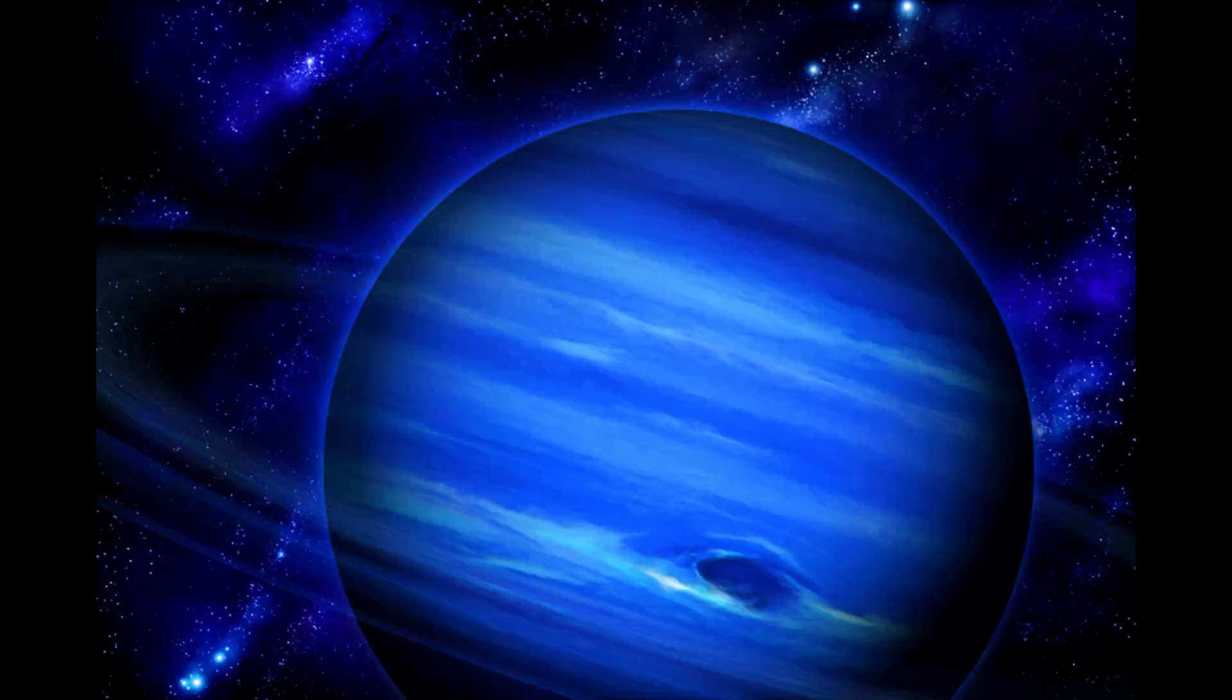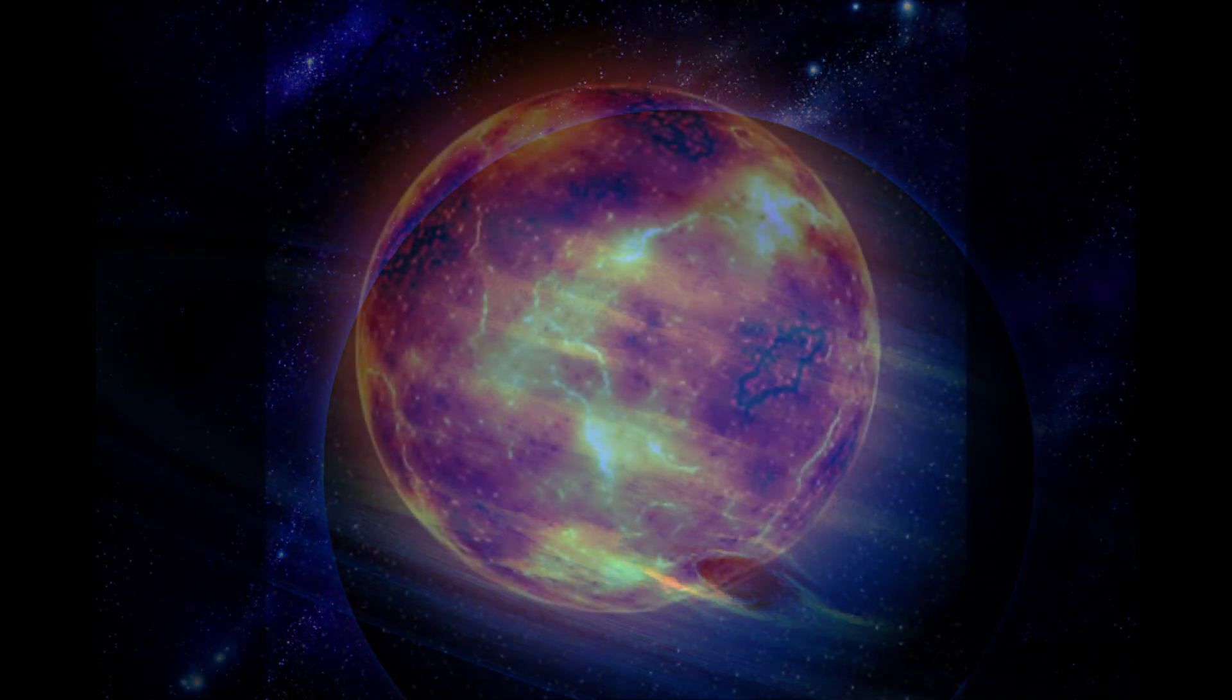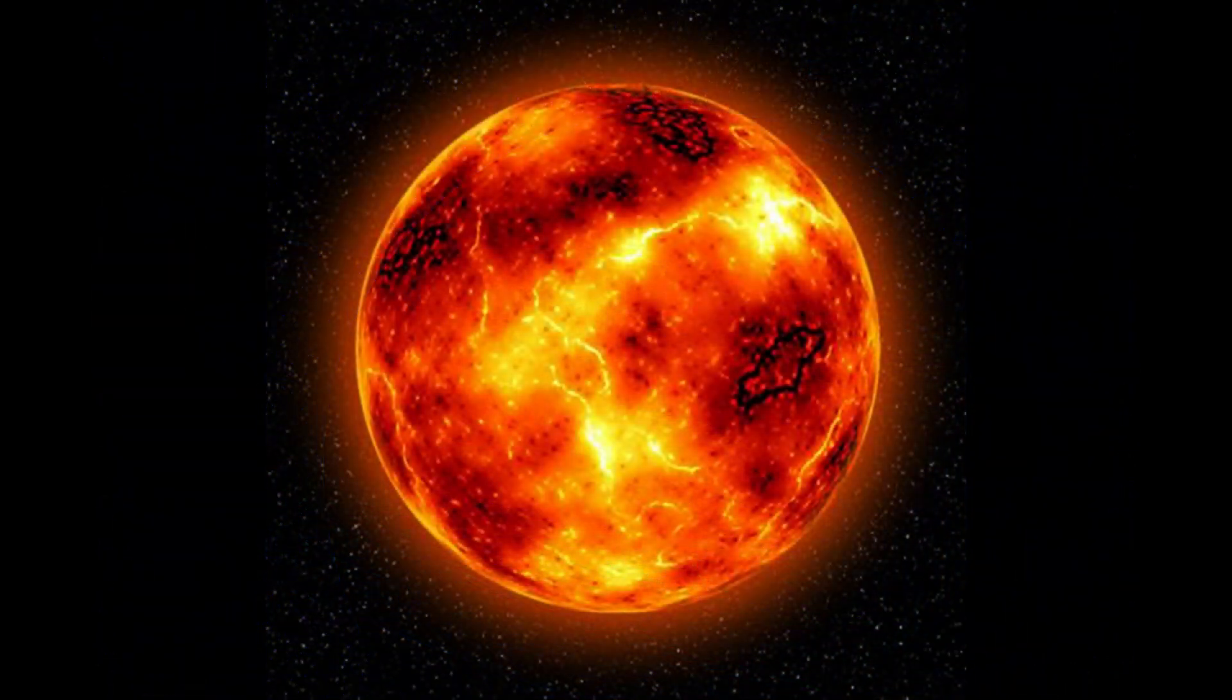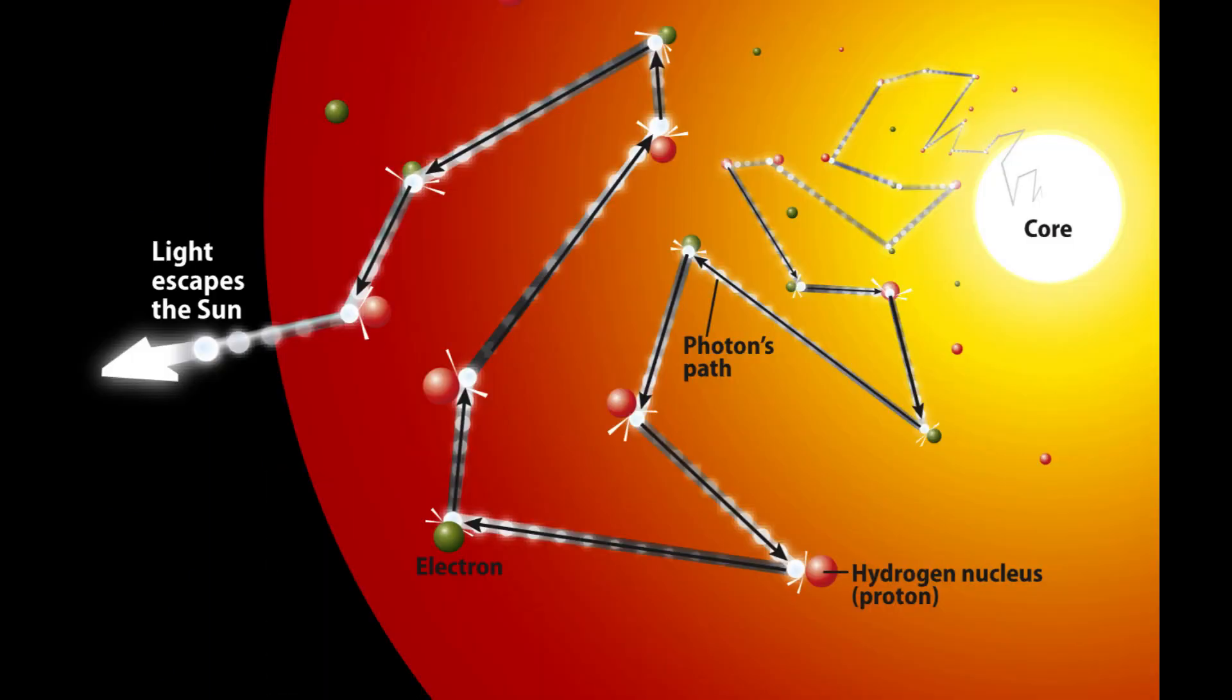Neptune is the most distant planet in our solar system and has the strongest winds. The Sun is a star and is about 4.6 billion years old.